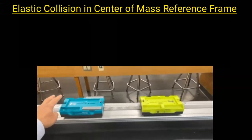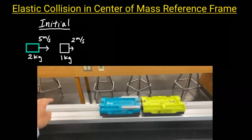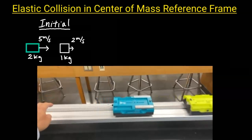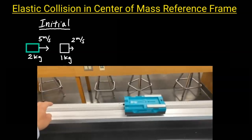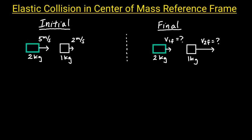In this video, you'll learn a shortcut method for solving elastic collision problems with two unknown variables. We'll begin with this problem. Object 1 is 2 kilograms and moving towards the right at 5 meters per second. In front of object 1 is object 2, which has a mass of 1 kilogram and moving to the right at 2 meters per second. After object 1 bumps into object 2, what are the velocities?